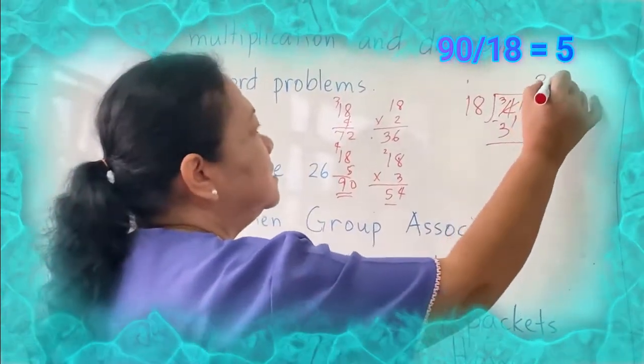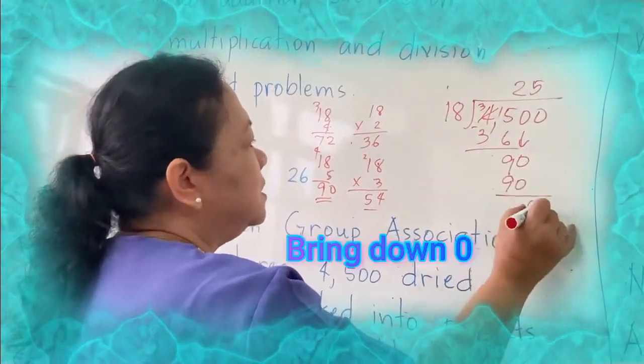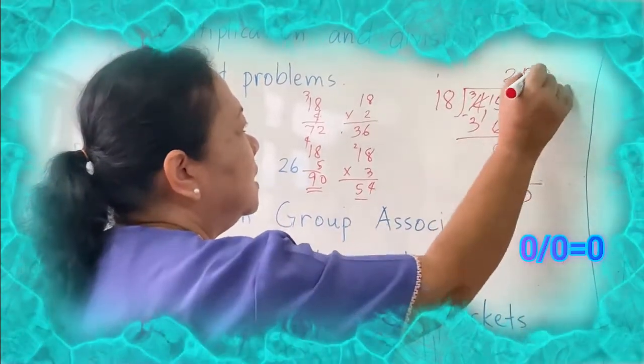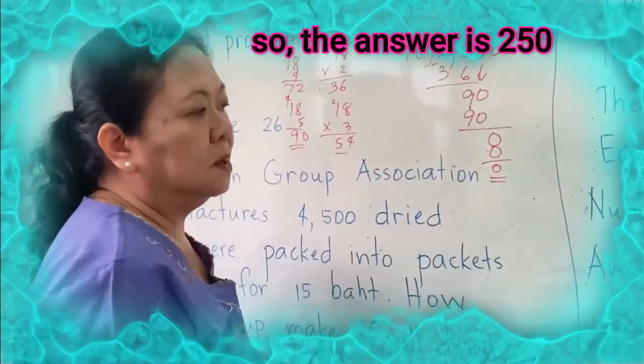So this is 5 here. 5 times 18 is 90. Bring down 0. 0 divided by 18 is 0. 0 times 18 is 0. So the answer is 250.